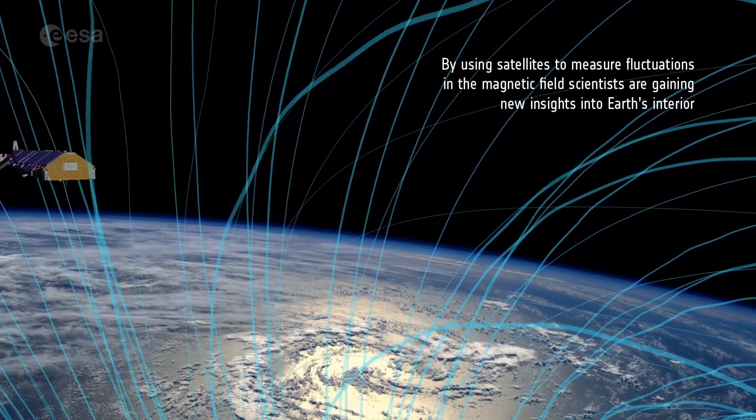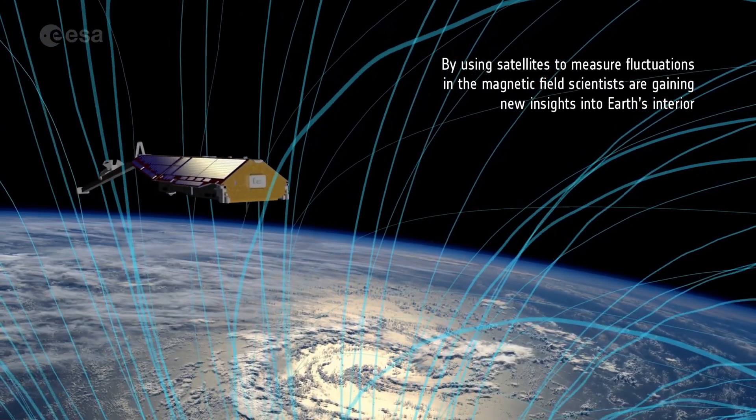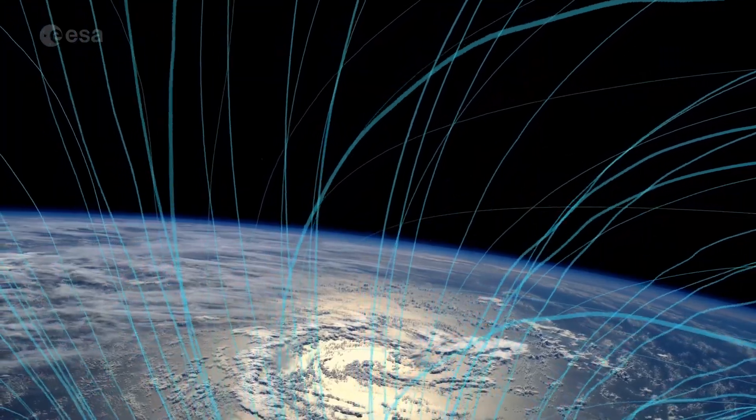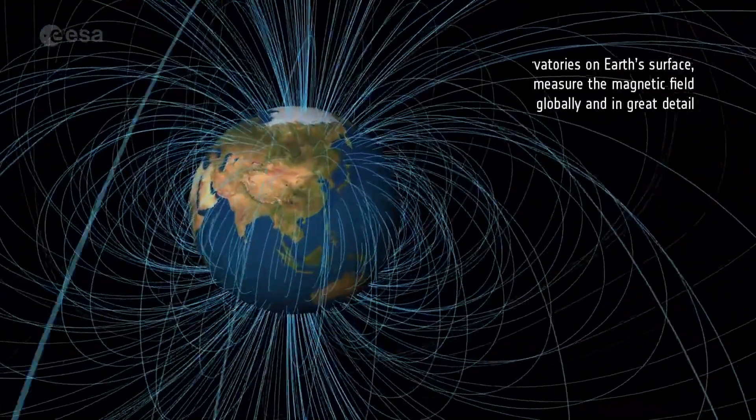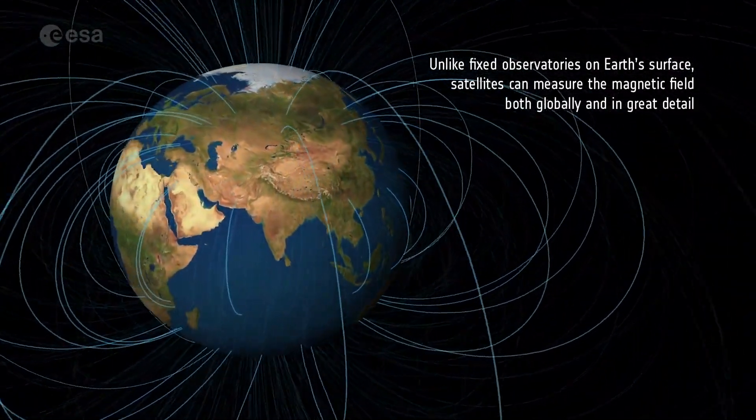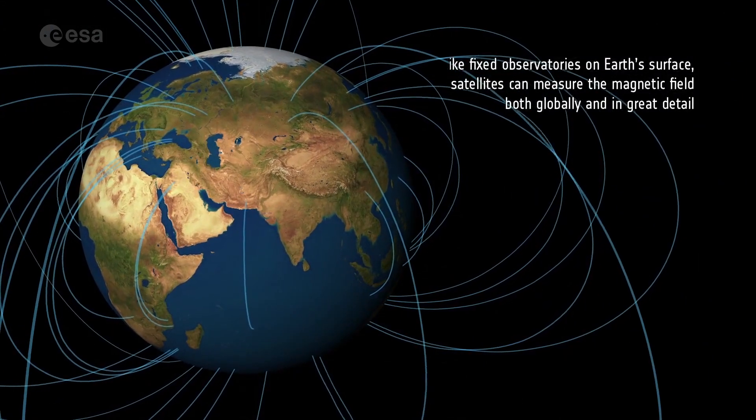By using satellites to measure fluctuations in the magnetic field, scientists are gaining new insights into Earth's interior. Unlike fixed observatories on Earth's surface, satellites can measure the magnetic field both globally and in great detail.